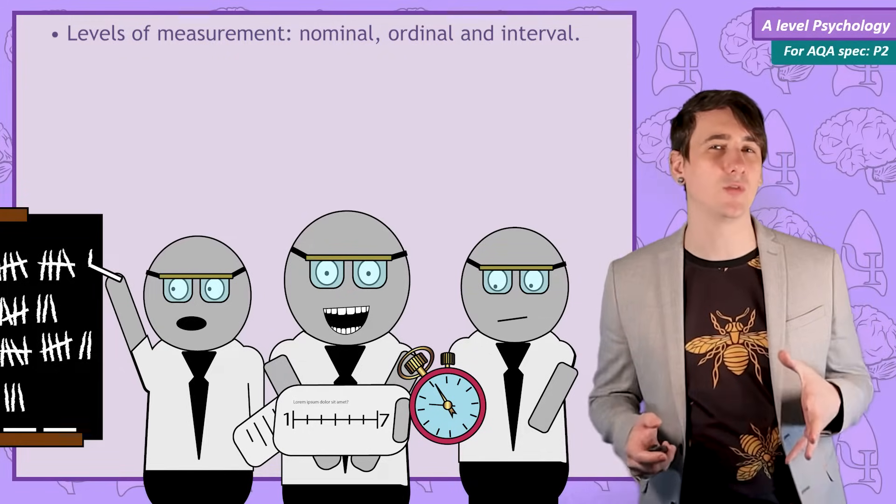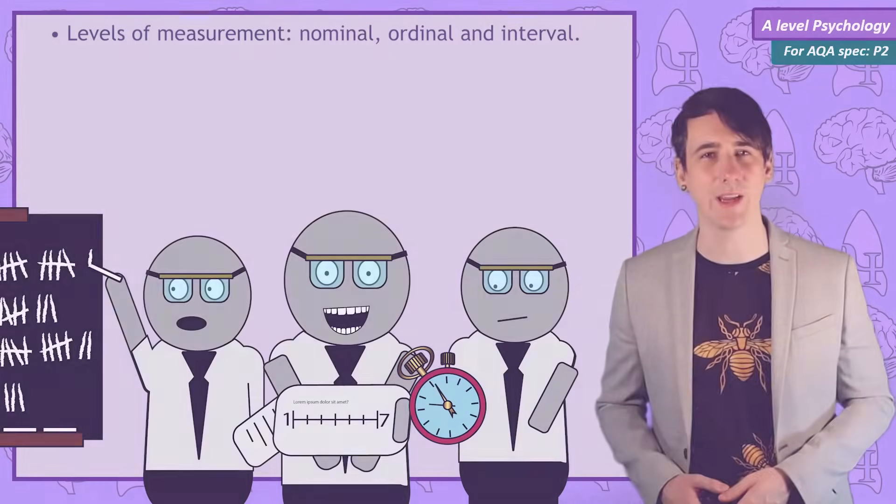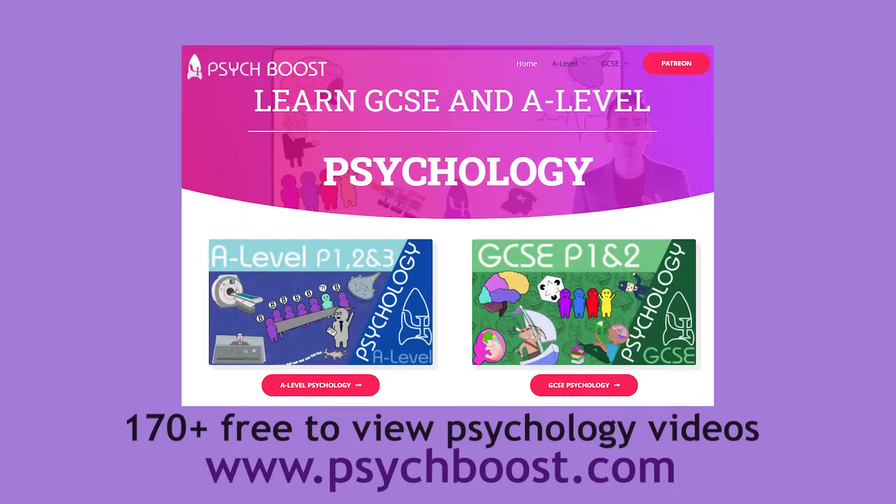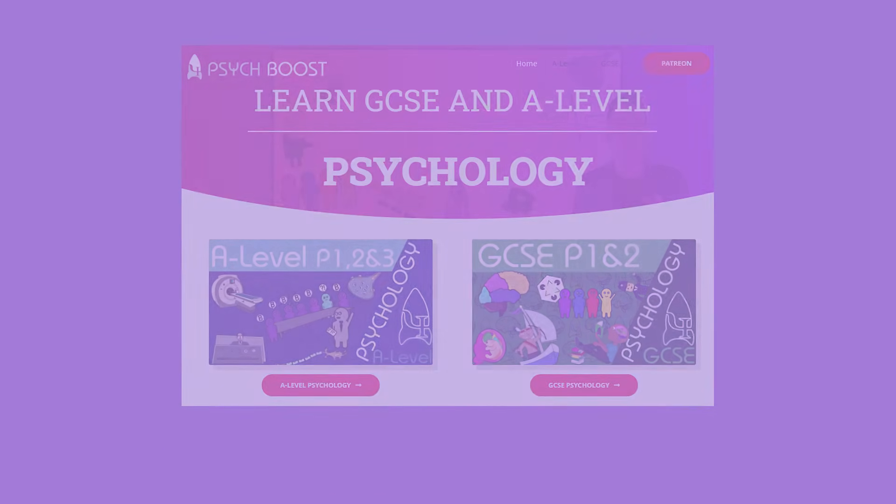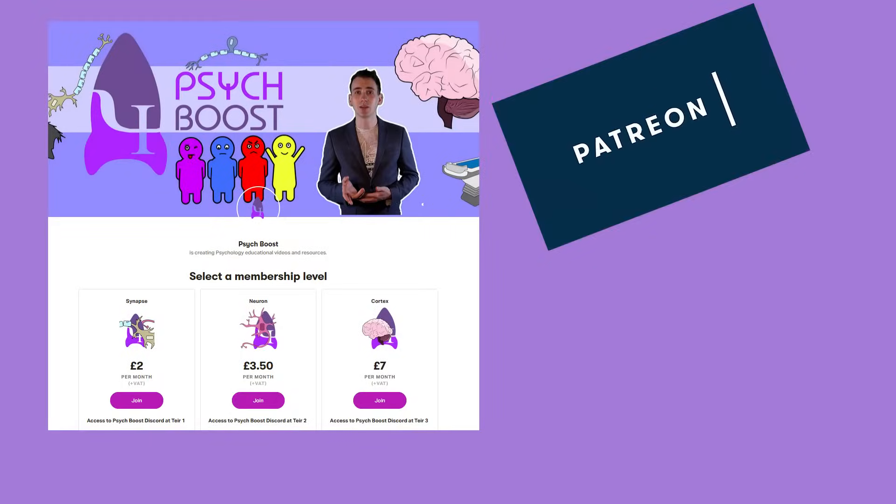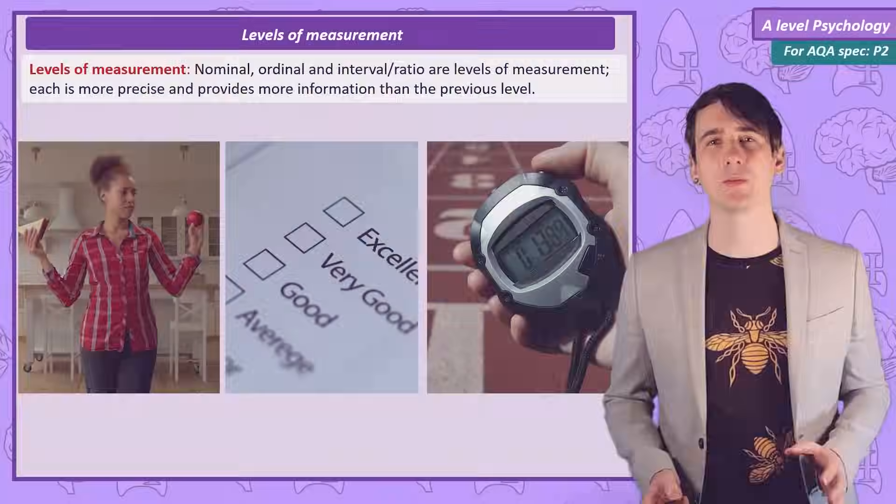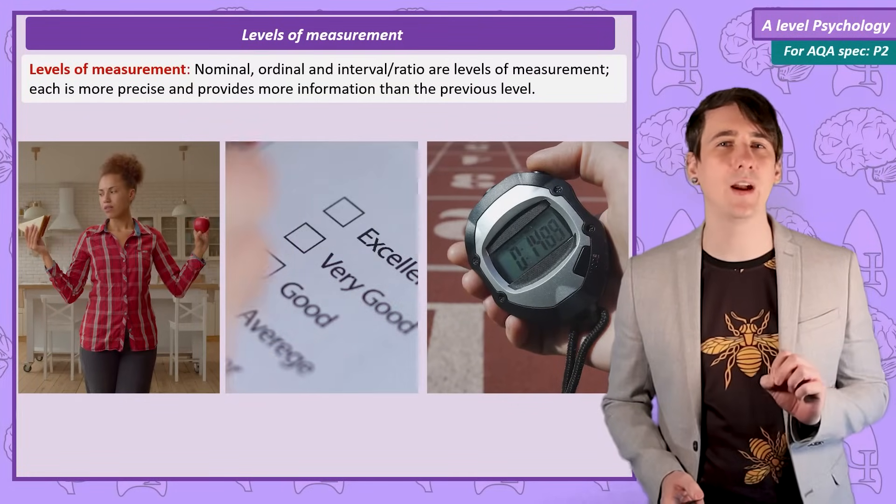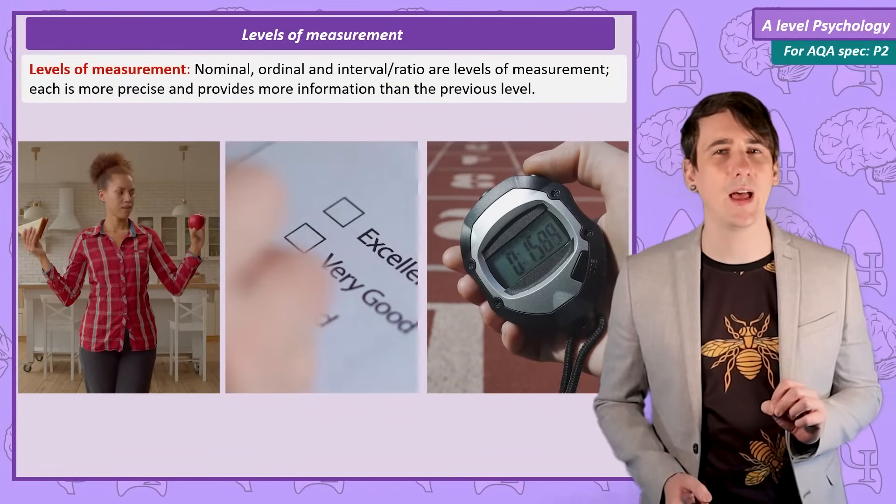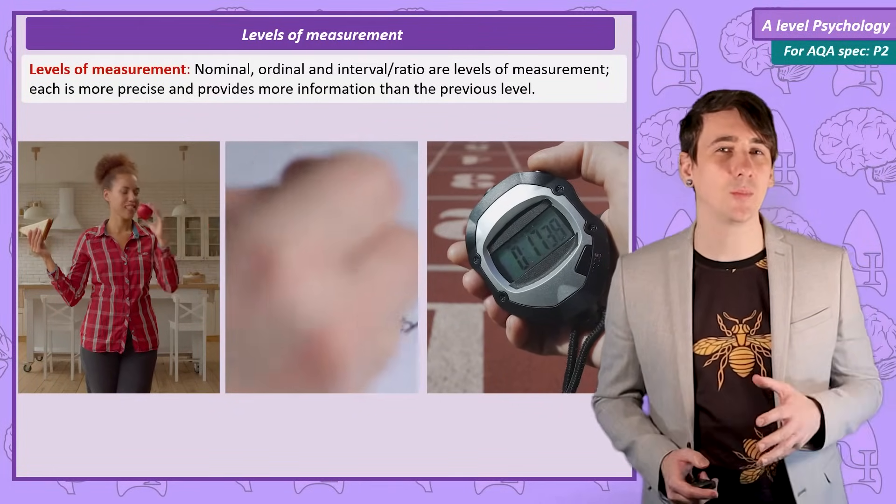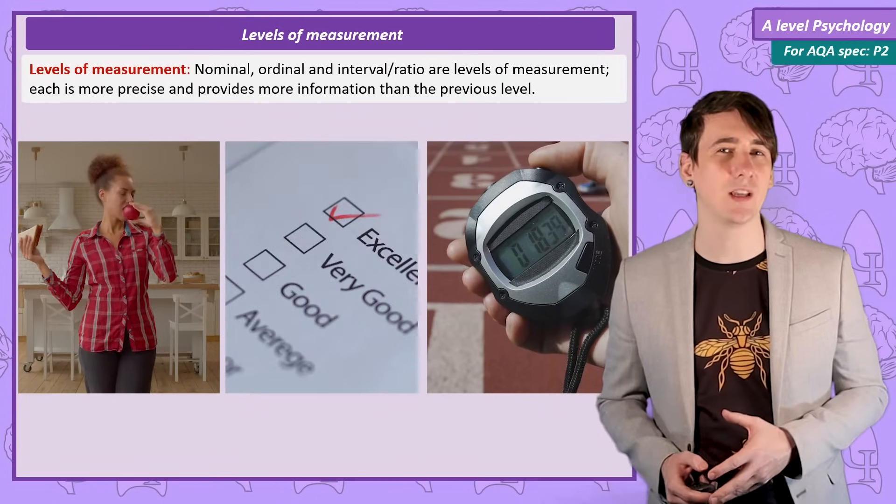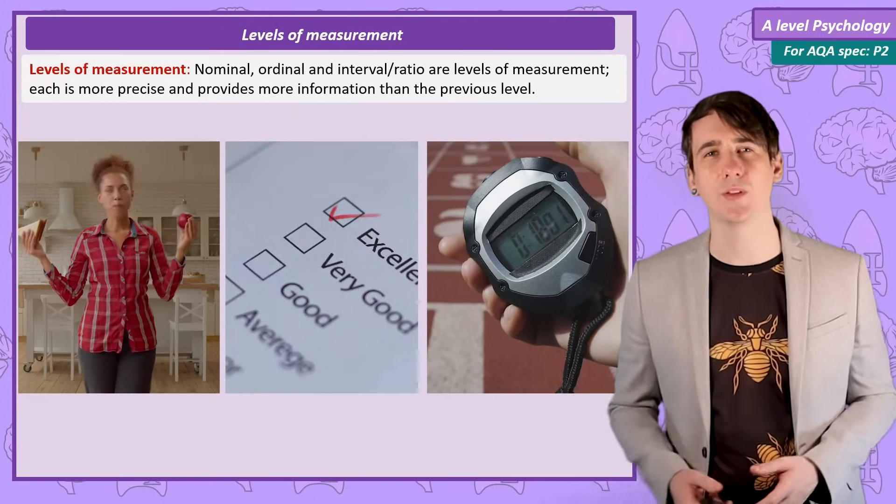We need to understand that these choices in data collection result in numerical data with different properties. So in this video we will look at the properties of Nominal, Ordinal and Interval data. Levels of Measurement refer to the numerical data at varying levels of precision. That I know is a confusing sentence, but as I explain Nominal, Ordinal, Interval data and their characteristics you will see what this means.